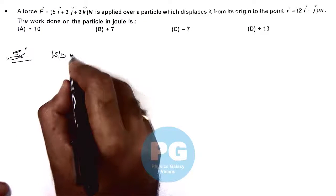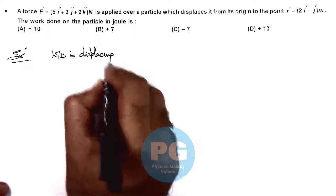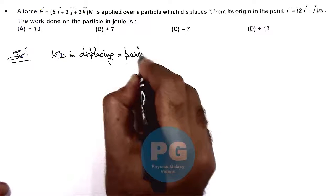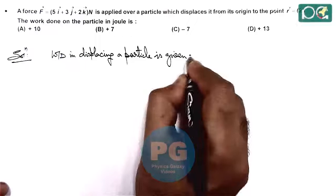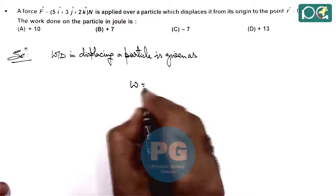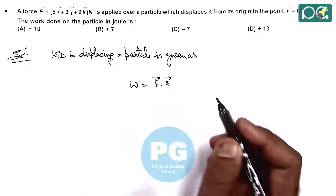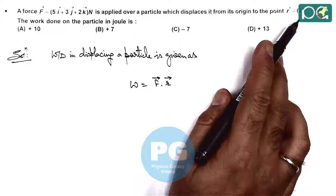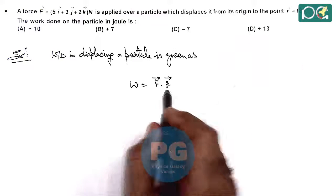Work done in displacing a particle is given as force multiplied by the position vector. Since the particle starts from the origin, the displacement vector is the same as the position vector R.